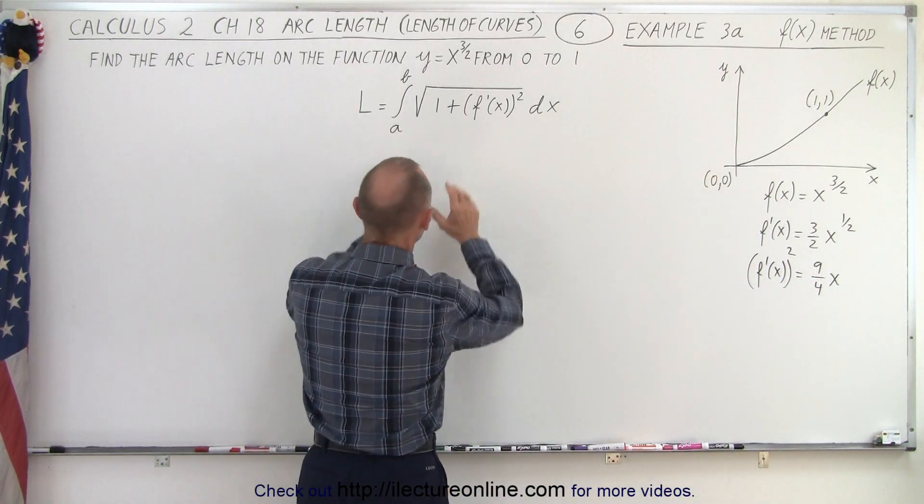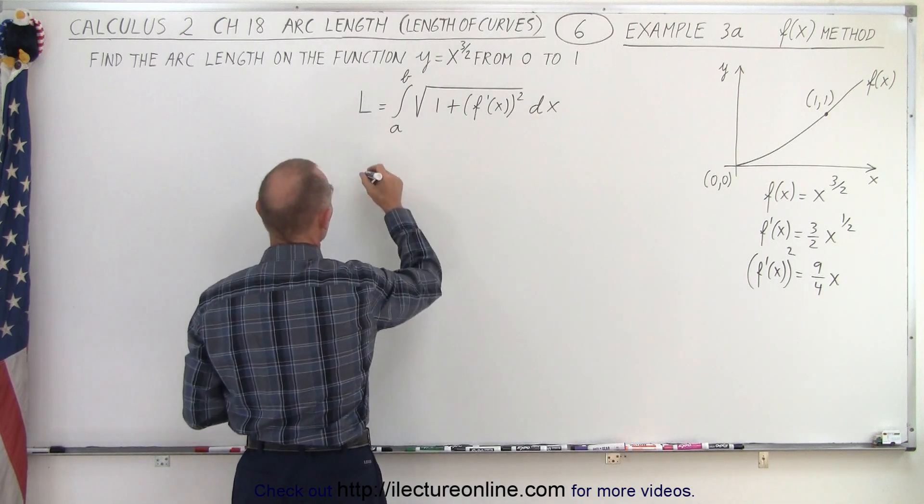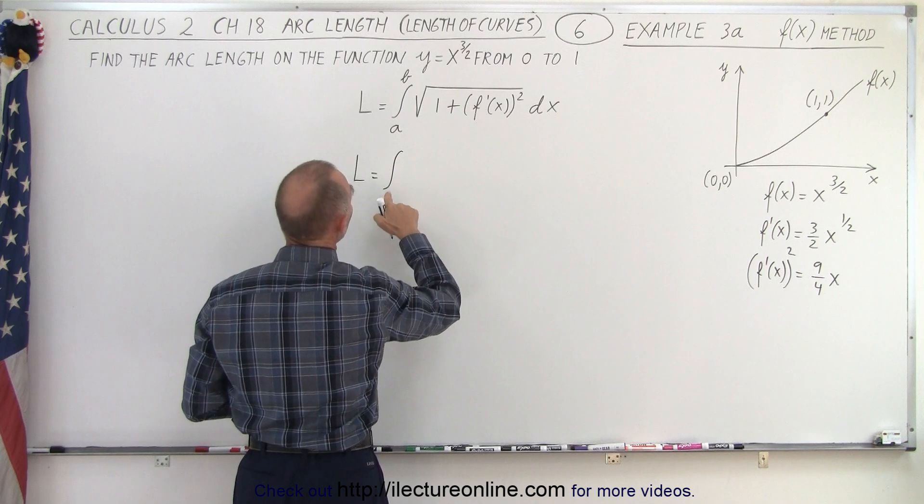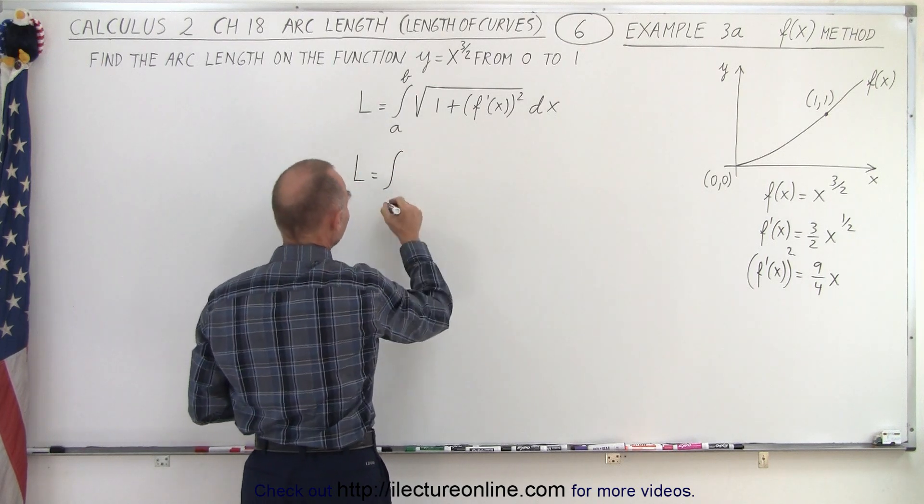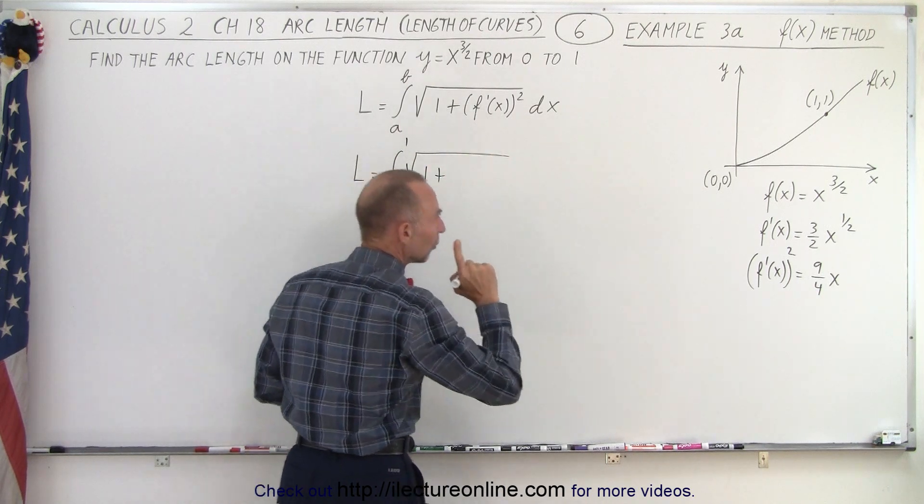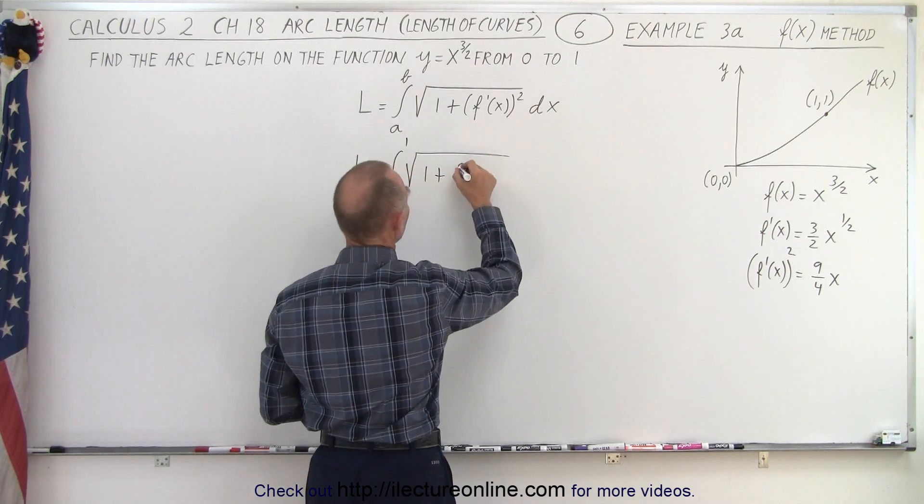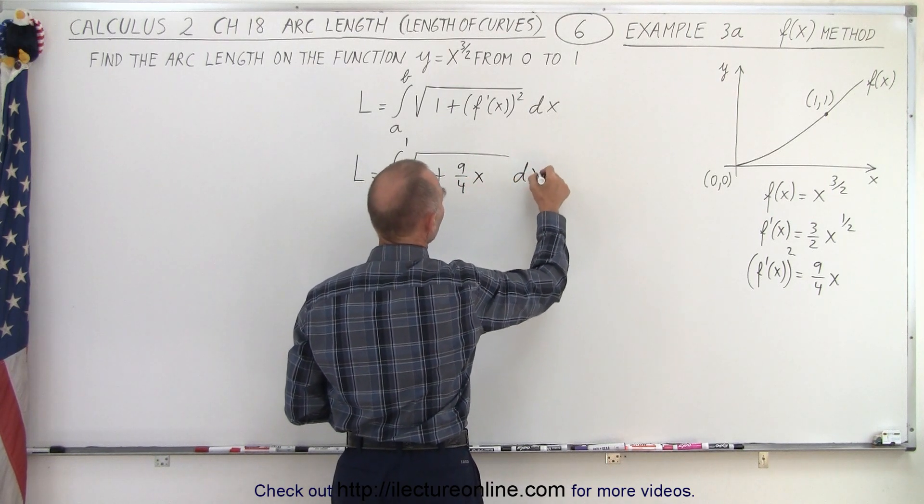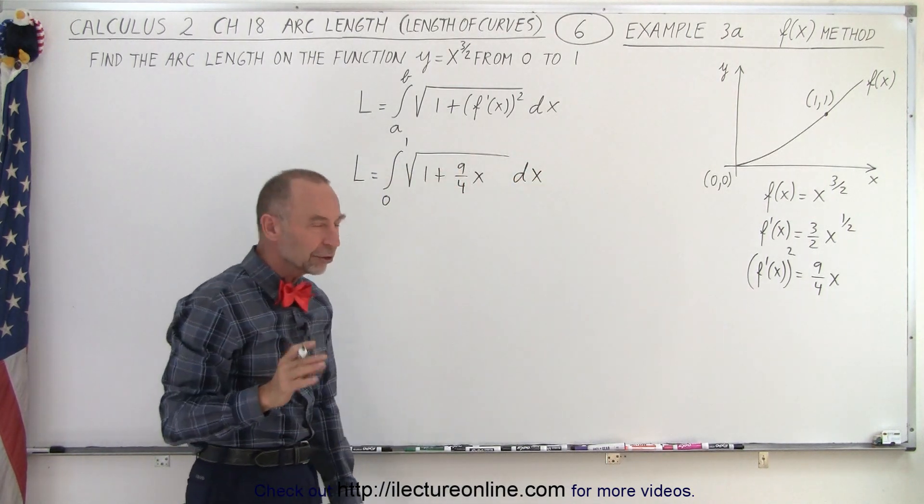Now we'll go ahead and plug that in here and see what we get. So we have the length is equal to the integral from zero to one, notice that these are x limits from zero to one, of the square root of one plus the derivative of the function squared which is nine over four x times dx and now this is not that difficult to integrate.